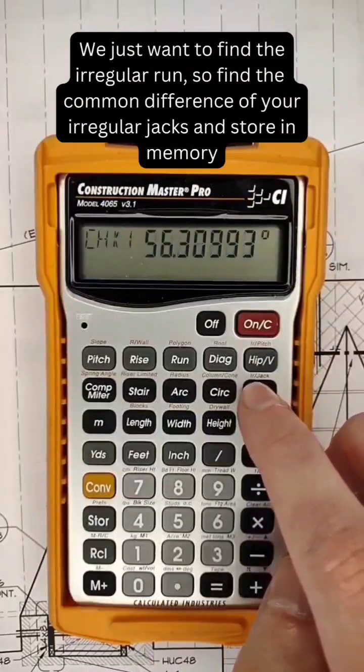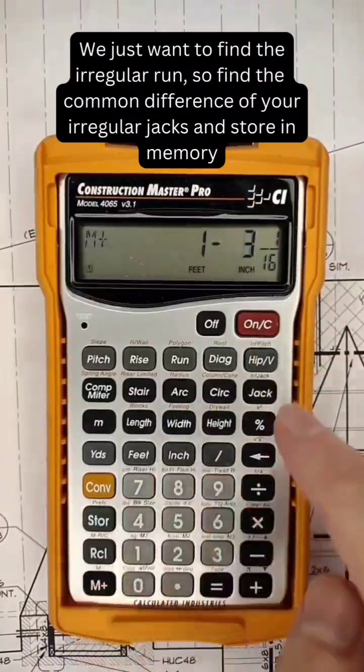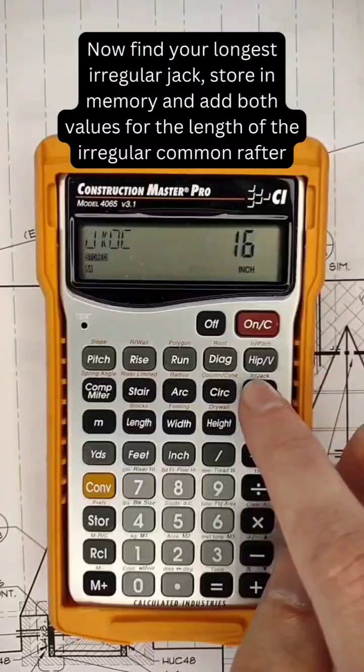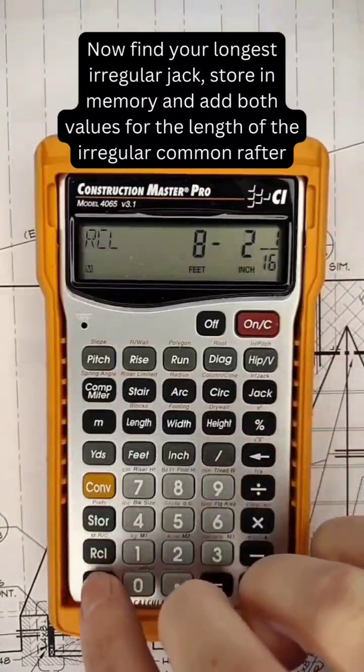We just want to find the irregular run, so find the common difference of your irregular jacks and store in memory. Now find your longest irregular jack, store in memory, and add both values for the length of the irregular common rafter.